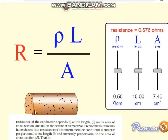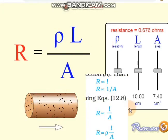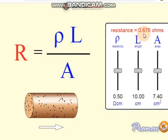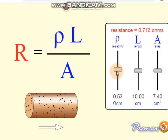If the area is increased, then the resistance will decrease. You can also see the formula: resistance is directly proportional to L and inversely proportional to area. Here, rho (ρ) is resistivity — it's a Greek letter. If we increase the resistivity, the resistance will also increase.